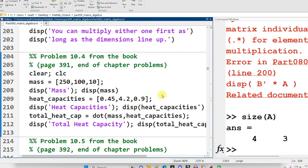Now, I'm no expert in this area. I'm much more of a programmer than a physicist or an engineer. But it turns out that the overall heat capacity of our object is the product of each mass with each heat capacity. So for each individual component, so 250 times 0.45 plus 100 times 4.2 plus 10 times 0.9. Hey, that's a dot product.